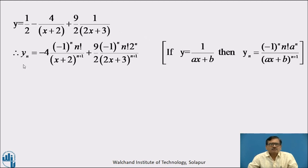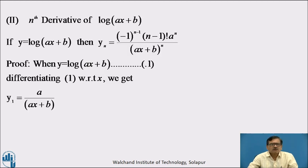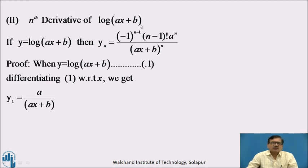This gives the nth derivative of the given algebraic function. Simplifying further, yn equal to (minus 1)ⁿ into n! times [9 times 2^(n minus 1) divided by (2x plus 3)^(n+1) minus 4 divided by (x plus 2)^(n+1)]. This is the simplified form of the nth derivative of the given function. We have seen sufficient examples on algebraic functions; now we will go for the next type — the nth derivative of log(ax plus b).